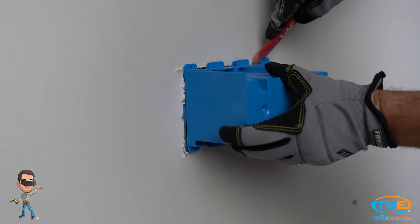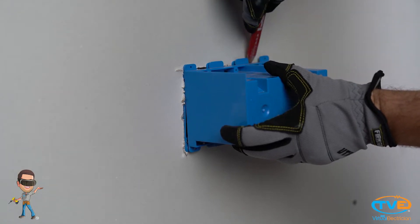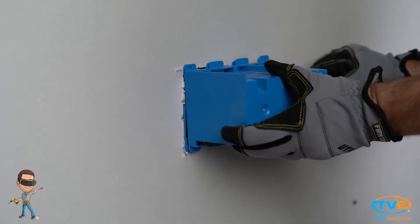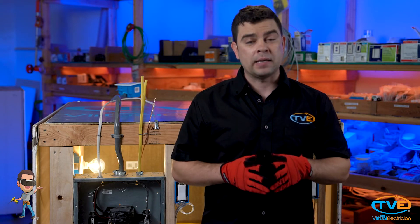Then, you want to have a three-gang remodel box ready. Stick it over the two-gang box and trace it out. I like to do this because this shows you the drywall that you can damage and the drywall you can't.